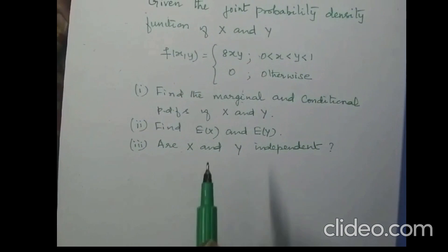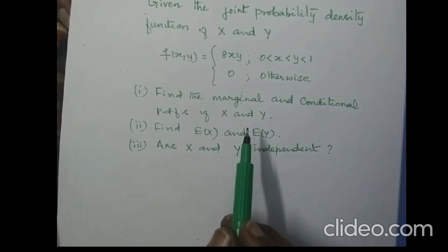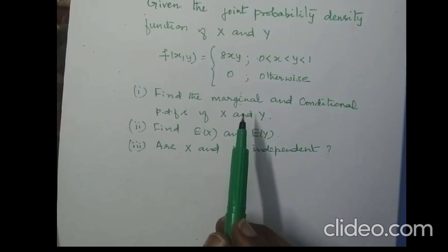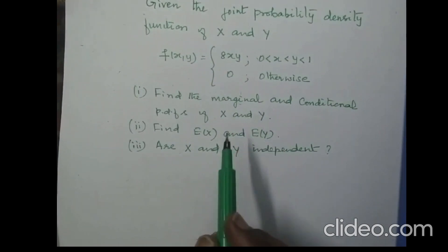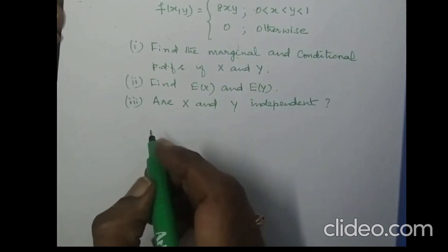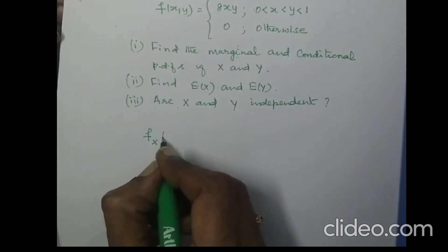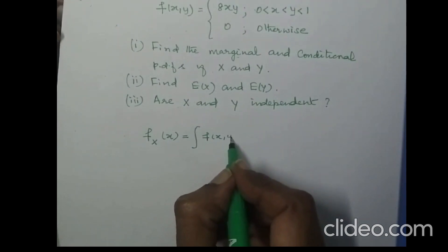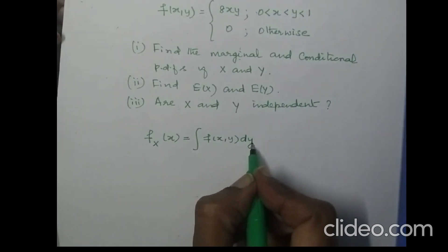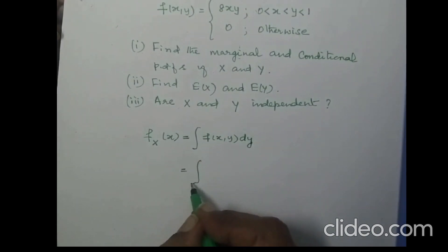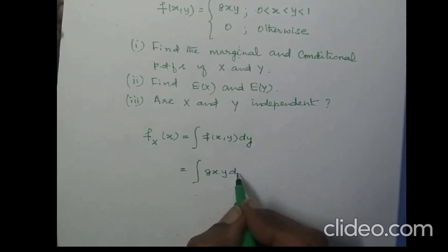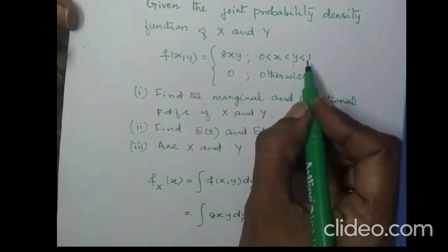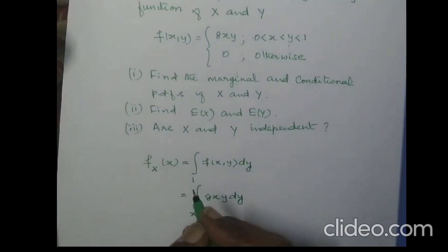If you know how to find the marginal and conditional density functions for continuous as well as discrete random variables, you will definitely be able to answer a part B question in any university examination. Let us find the marginal density function of x. It is given by fx(x) = integral of f(x, y) dy, integrating the joint density function with respect to y. Here we need the limits for y, which vary from x to 1.